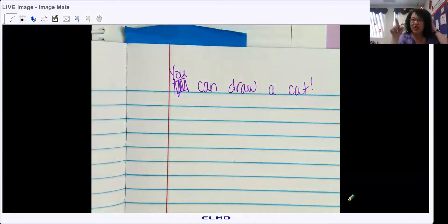How about, instead of I, how about you? Because you're giving directions to someone else. You can draw a cat.